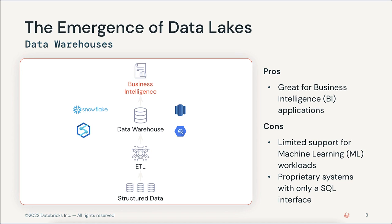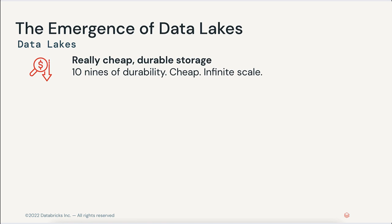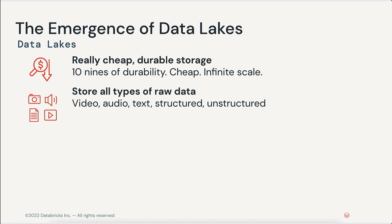Some iterations of data warehouses were attempts to bridge those gaps. Data lakes emerged to handle raw data in a variety of formats on cheap storage for data science and machine learning, though typically data lakes lacked critical features from the world of data warehouses. Data lakes presented a new paradigm in data management and offer many advantages over traditional data warehouses. They provide cheap, incredibly durable storage, organizations can store many different varieties of data, and the data can be in open formats, meaning it plays nicely with other tools in the data ecosystem.